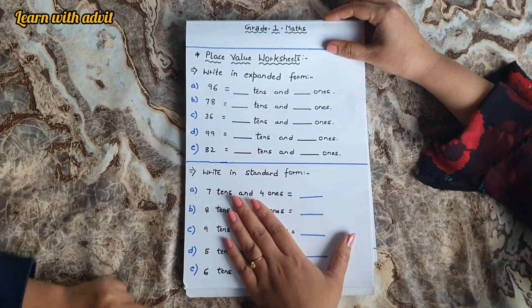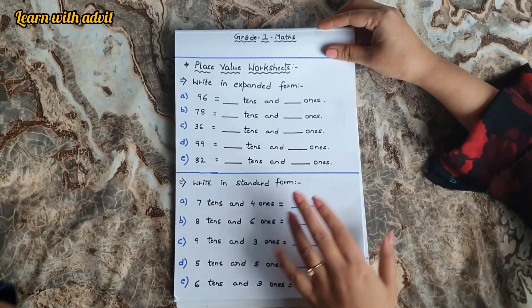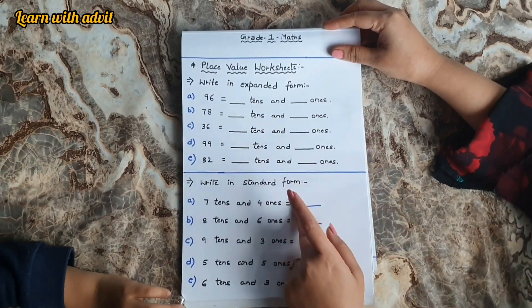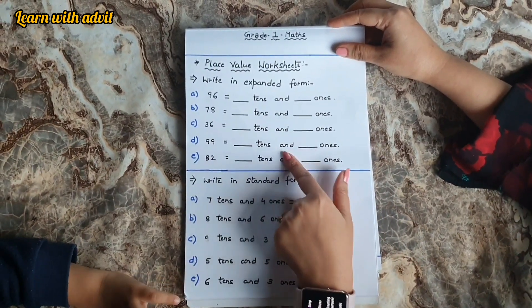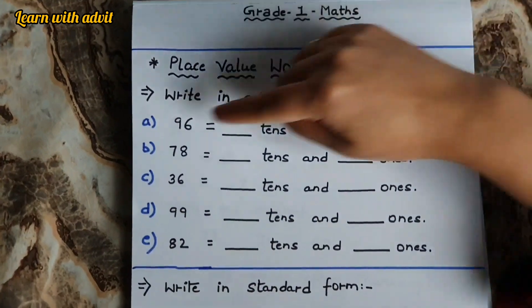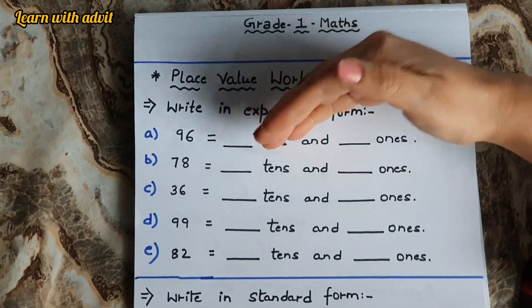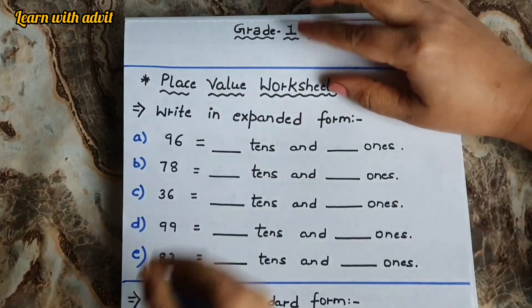So this is the sheet for place value worksheet. There are two forms: expanded form and standard form. In first you have to write in expanded form. 96 - write what number will come in tens and ones for ninety-six.